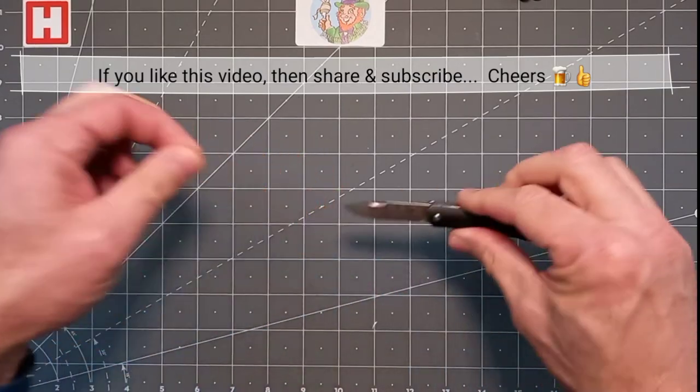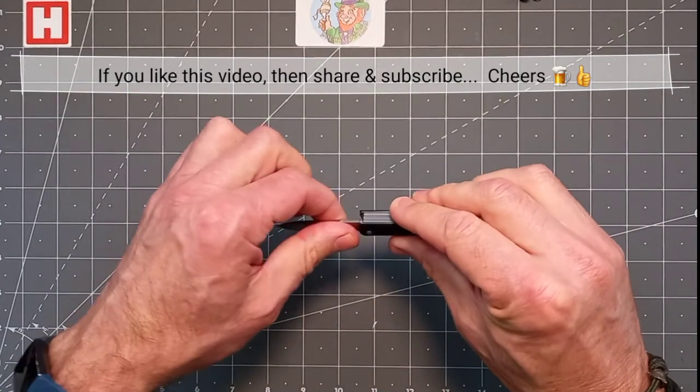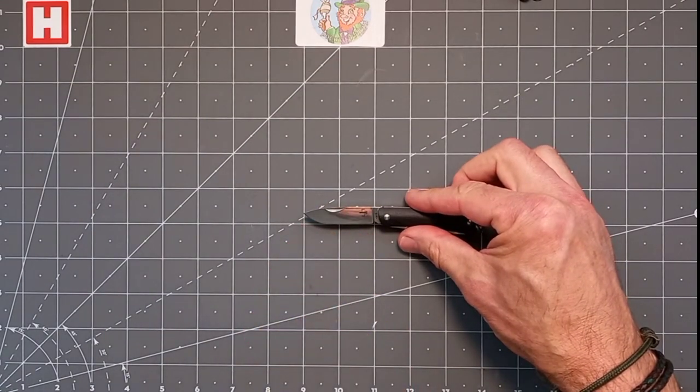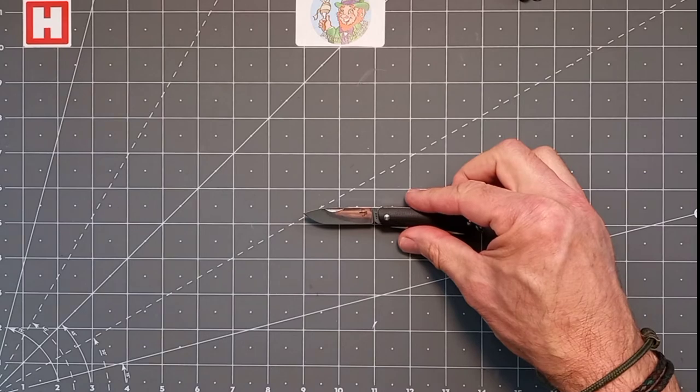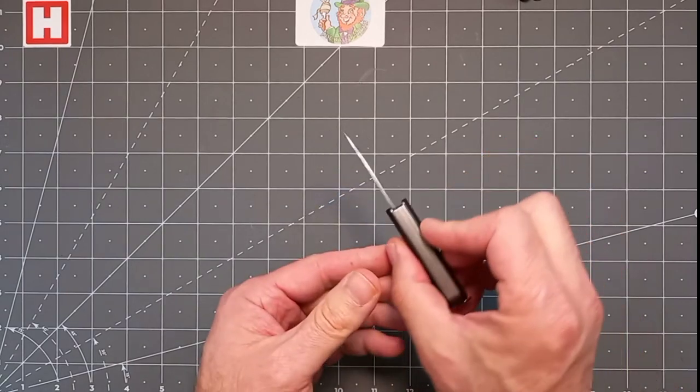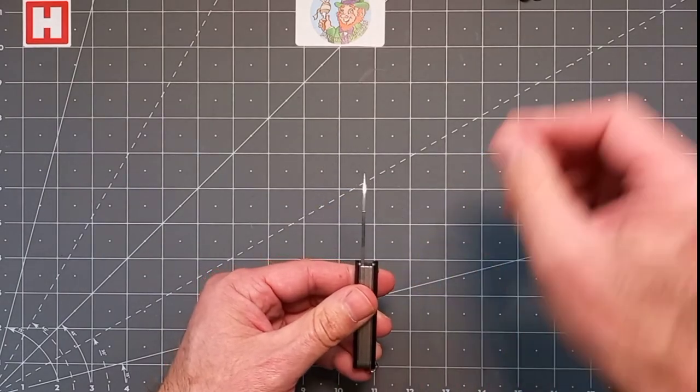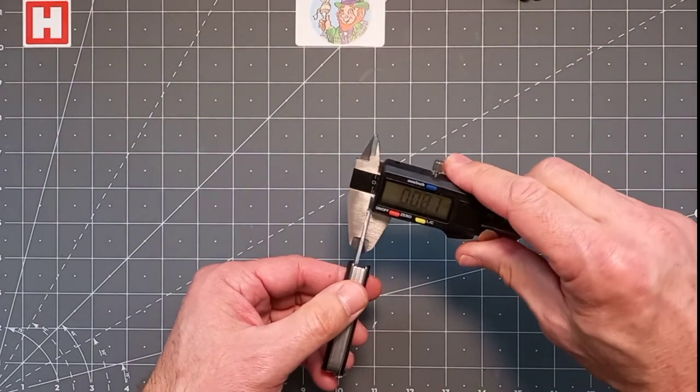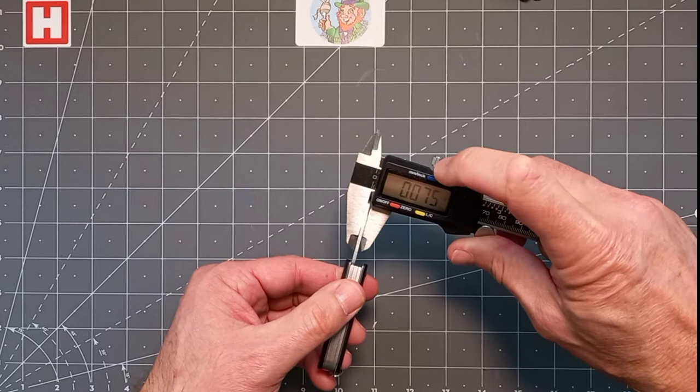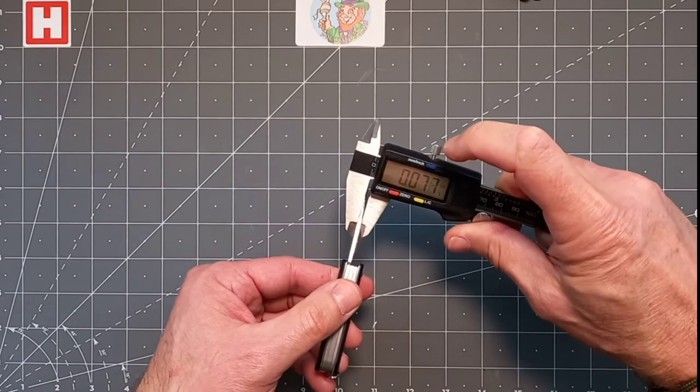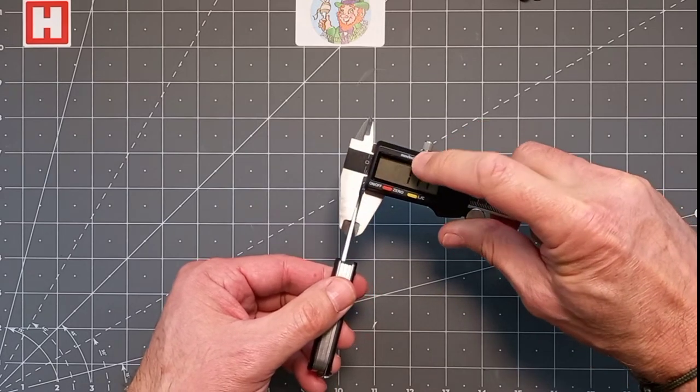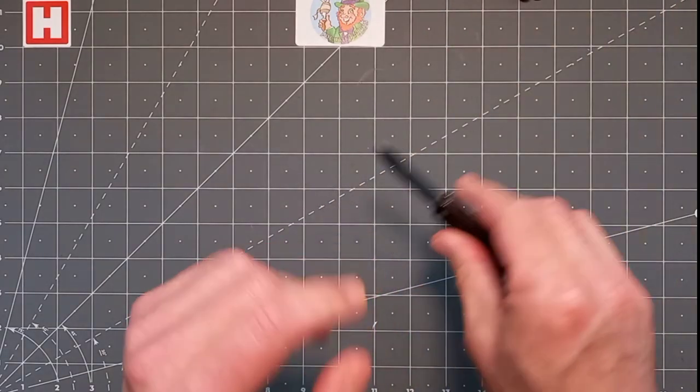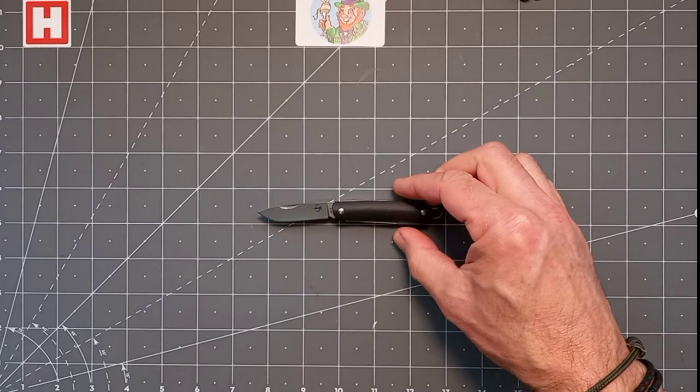Right, blade length. Overall you're looking at from the sharpening choil two inches, well five centimeters. The thickness of this blade is about 1.82 mil or something like that. Nearly 0.8 of an inch or nearly two mil.